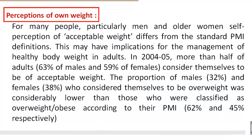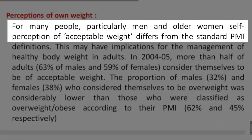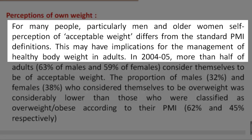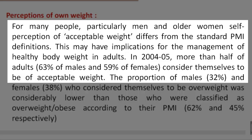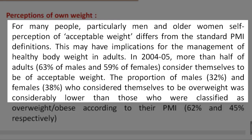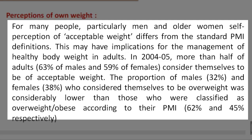Reading 4. Perceptions of own weight. For many people, particularly men and older women, self-perception of acceptable weight differs from the standard BMI definitions. This may have implications for the management of healthy body weight in adults. In 2004 to 2005, more than half of adults — 63% of males and 59% of females — consider themselves to be of acceptable weight. The proportion of males (32%) and females (38%) who consider themselves to be overweight was considerably lower than those who were classified as overweight or obese according to their BMI — 62% and 45% respectively.